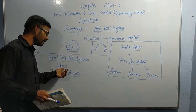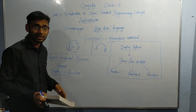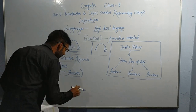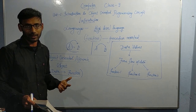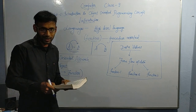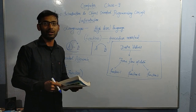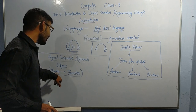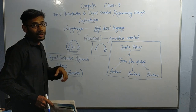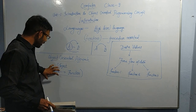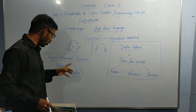In object oriented approach, data can be handled using functions, but there is an important point: data cannot be accessed freely if you use an access modifier. In higher classes you will learn about access modifiers. A function can control data, but if data is bounded as private, different functions will not be able to access that data. For example, only function 1 may have accessibility to private data, not function 2 or function 3.